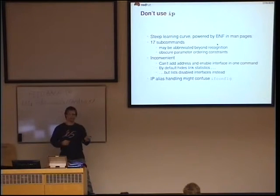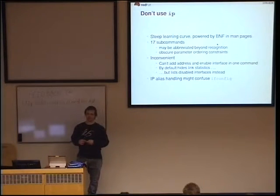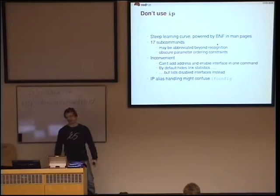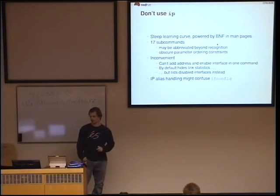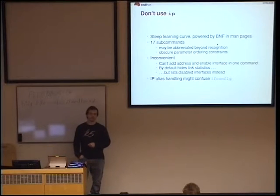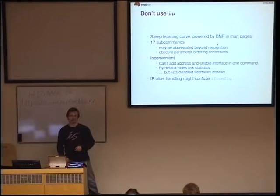Many people also said it's simply inconvenient. With ifconfig, you could just type ifconfig eth0, IP address, and boom — you have your interface. With iproute2, you have to add the IP address and then additionally set it up. And when you list your interfaces, you don't see the statistics by default, so you don't see what it's doing. But in addition, you get all the disabled interfaces, which many don't like or are not interested in.